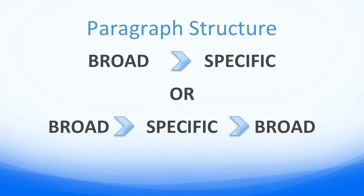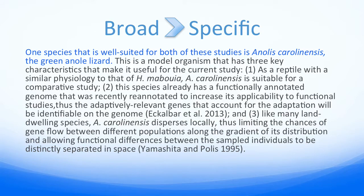Here are some examples of paragraphs that follow the broad to specific pattern. These example paragraphs are from Deliberations. The first sentence presents the idea that the green anole is well-suited for studies. The following sentence provides evidence for why the green anole is well-suited for studies. Even if we look at the second sentence quickly, we can see that it offers details and more specific information.